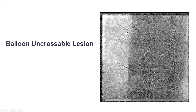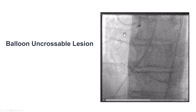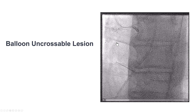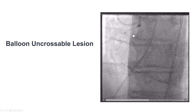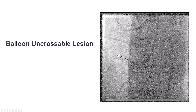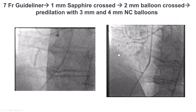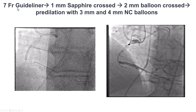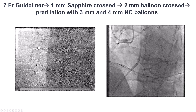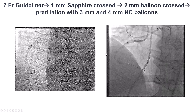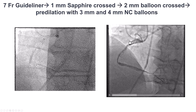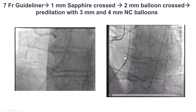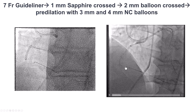The problem now was difficulty advancing a balloon — we could not cross through the mid-RCA. Eventually, after using a Sapphire Pro balloon as well as a 7 French Guideliner, we were able to advance equipment and serially pre-dilated the lesion with up to 4.0 mm non-compliant balloons.